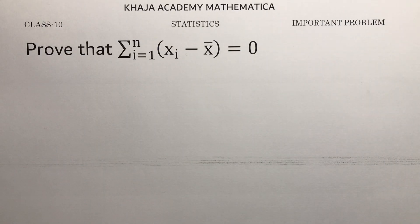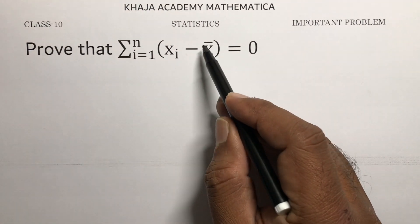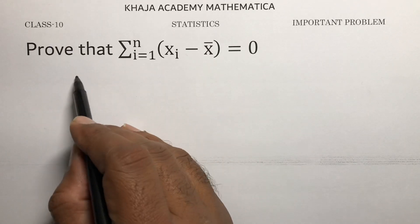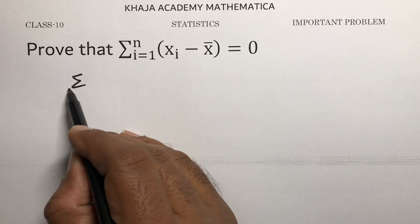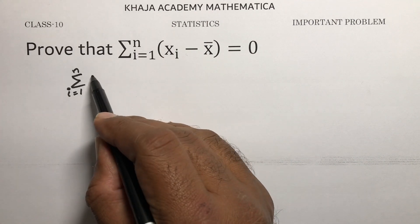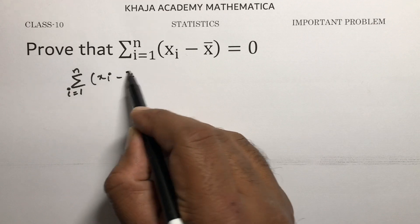An important problem from statistics: prove that the summation from i equals 1 to n of (Xᵢ minus X̄) equals 0, where X̄ is the mean, defined as the summation from i equals 1 to n of Xᵢ divided by n.